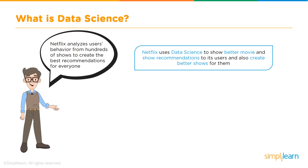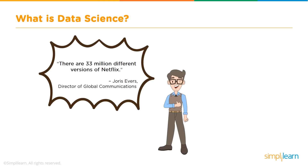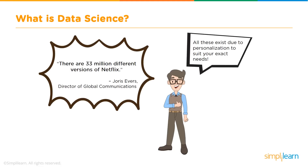Netflix uses data science to show better movie and show recommendations, while at the same time creating better shows for users. There are 33 million different versions of Netflix, says Joris Evers, who's the director of Global Communications. Netflix currently has more than 125 million users worldwide, which means on average only four people get the same iteration of Netflix, because of all the personalization done to suit the user's needs.